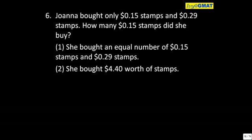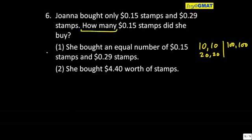If I look at only the first statement — 15-cent and 29-cent stamps — how many did she buy? If she bought an equal number, she could have bought 10 and 10, or 20 and 20, or 100 and 100. We don't know. This doesn't give me the exact precise number, so the first statement is not sufficient at all.